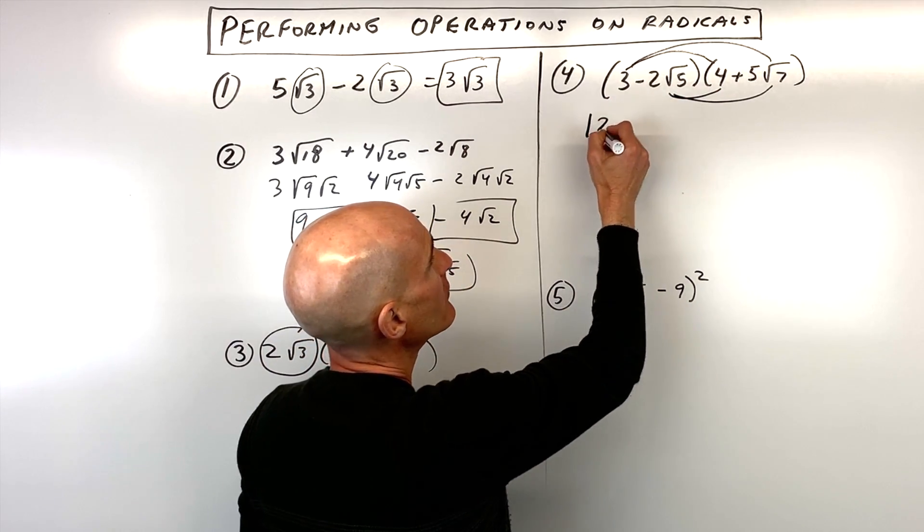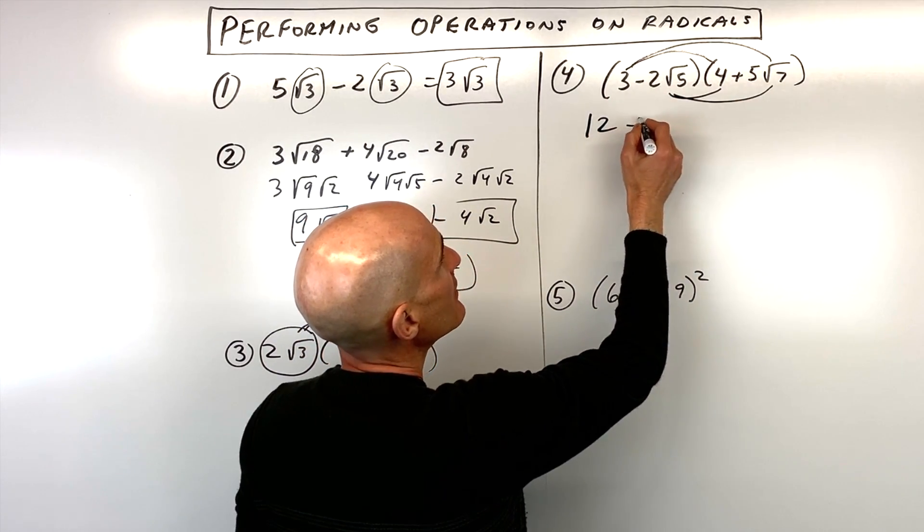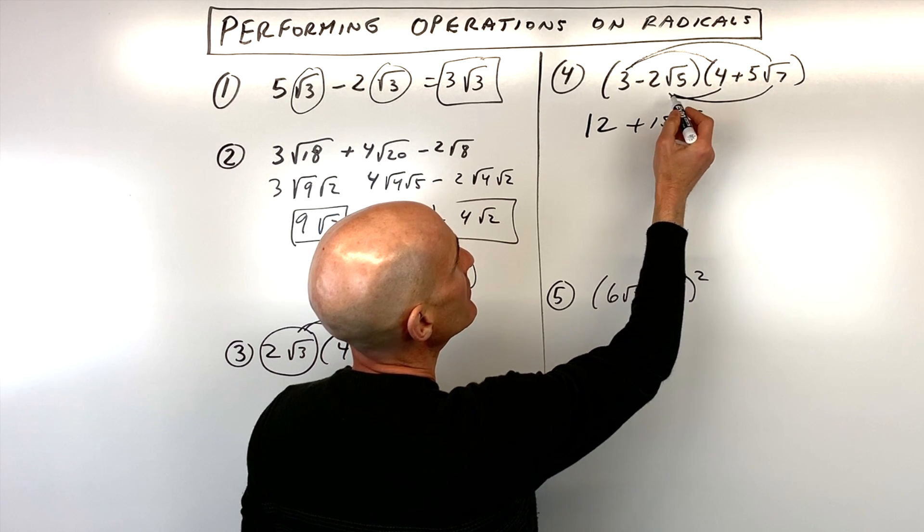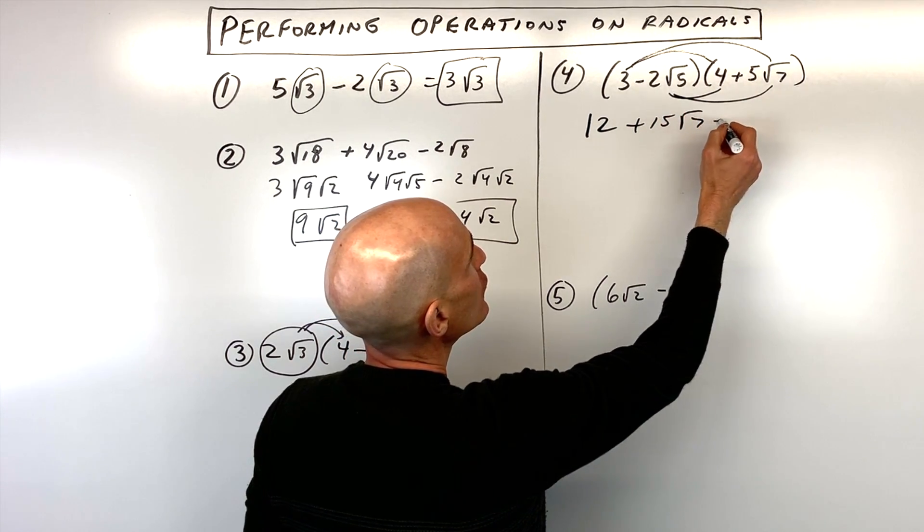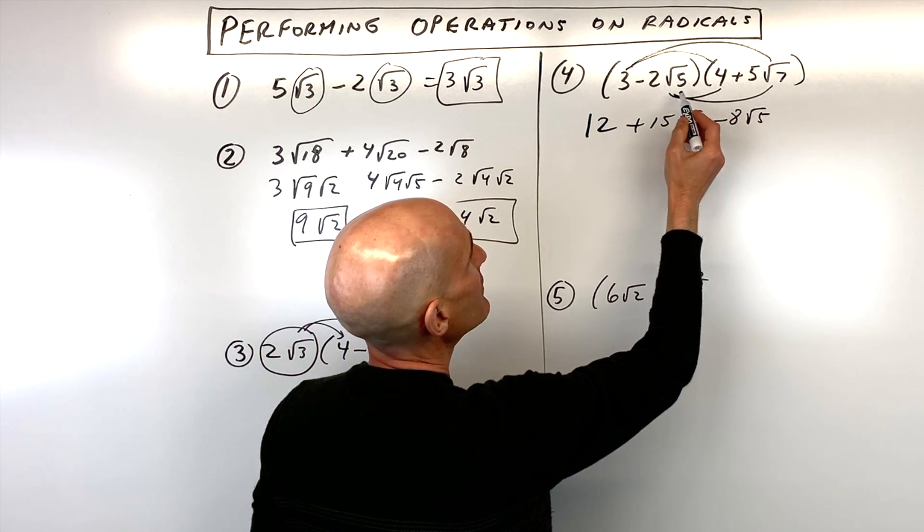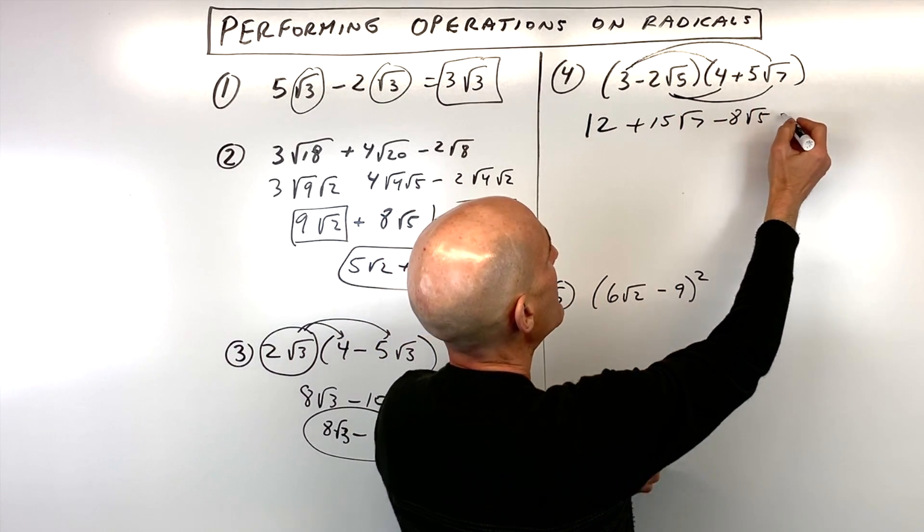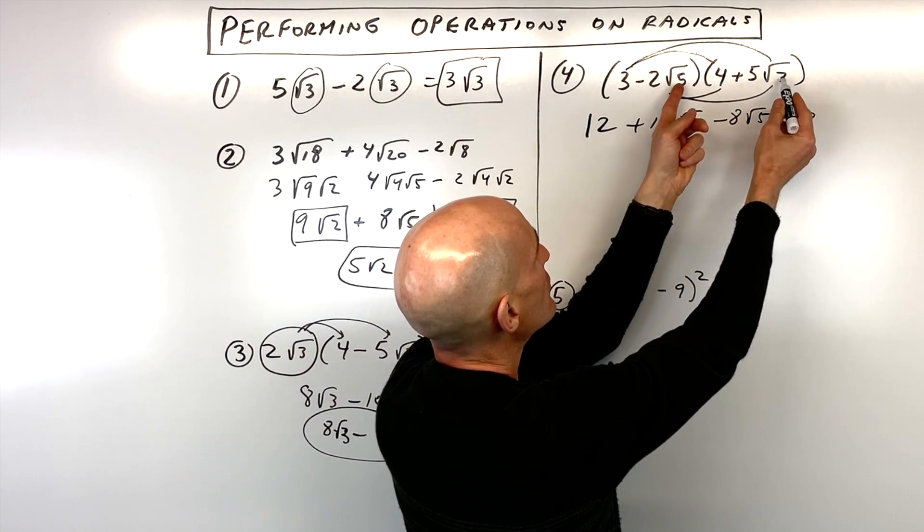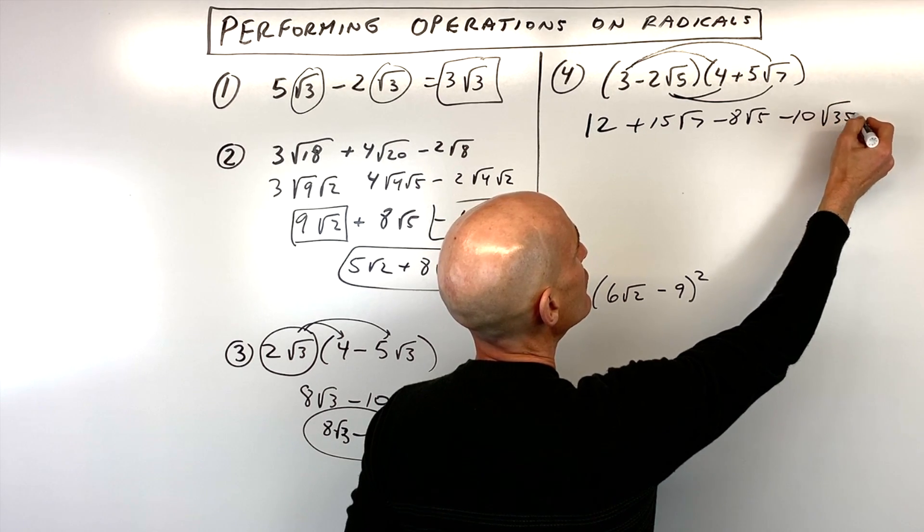So three times four is 12. Three times five root seven is 15 square root of seven. Negative two root five times four is negative eight square root of five. And then the last terms here, we've got negative two times five, which is negative 10. Square root of five times square root of seven is square root of 35.